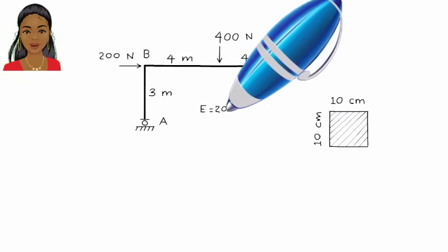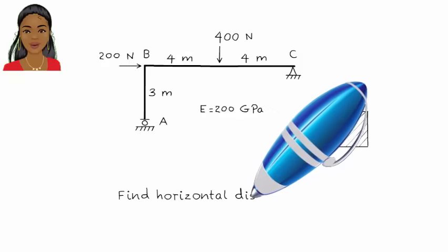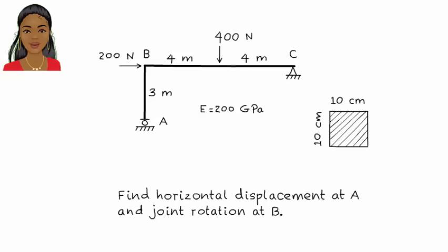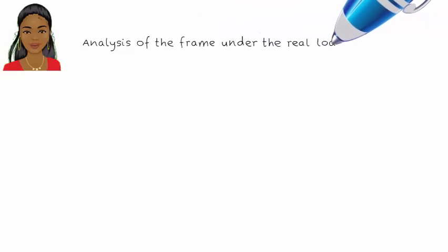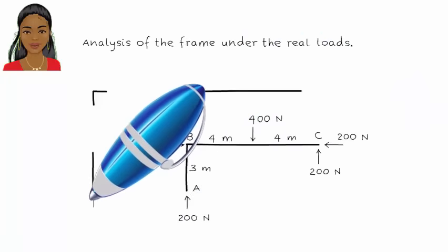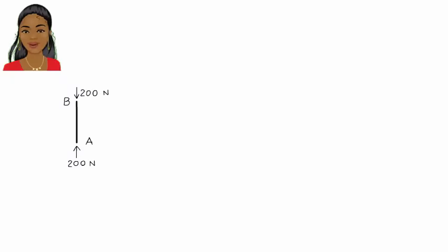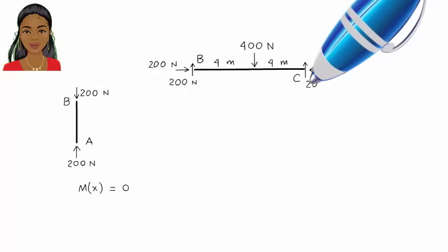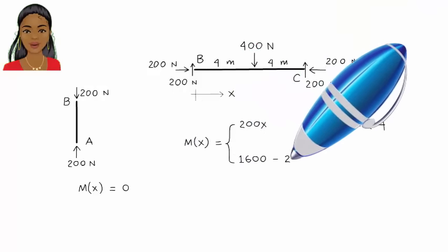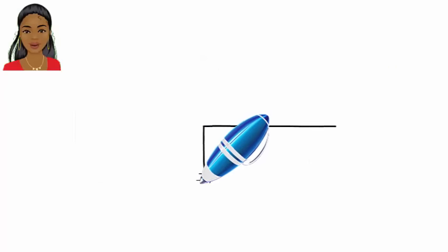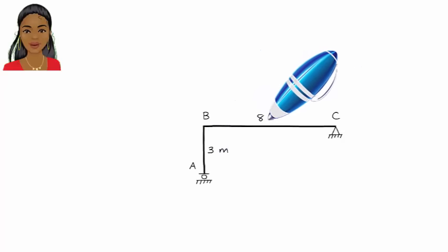Let's wrap up this lecture with a numeric example. Here's a simple frame. Both members have the same cross-sectional area and modulus of elasticity. We want to determine the horizontal displacement at A and the joint rotation at B. We shall start by analyzing the frame and determining the member forces under the applied loads. To determine the horizontal displacement at A, we place a virtual unit load at A. The direction of the load indicates the assumed direction for the displacement — here I am assuming the roller displaces to the right.